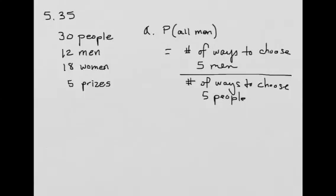So how many ways are there to choose five men? Well there's 12 men to choose from, and the order is not important, so we're going to use combinations here, and then we're choosing five of those men. And then how many ways are there to choose five people? Well there's 30 people. Again, combinations because the order is not important, and we're choosing five of those.